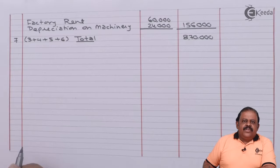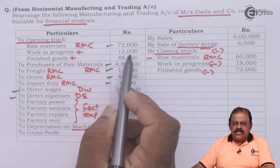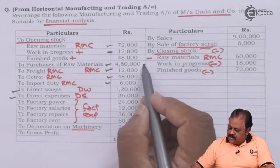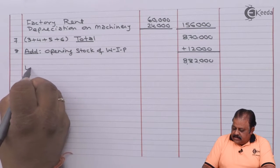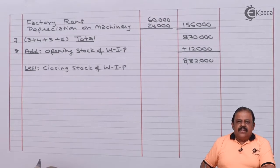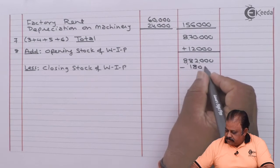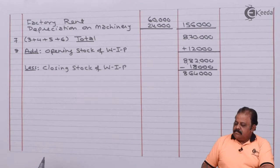To this we add opening stock of work in progress and deduct closing stock of work in progress. Opening work in progress is 12,000, giving us 8,82,000. Less closing stock of work in progress 18,000, leaving us with 8,64,000.